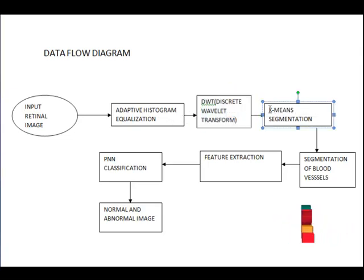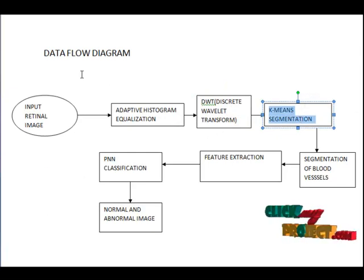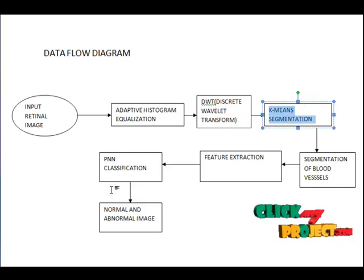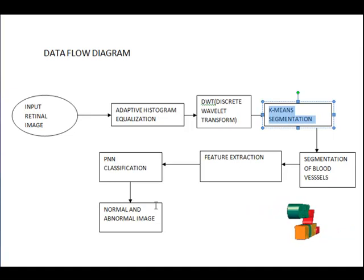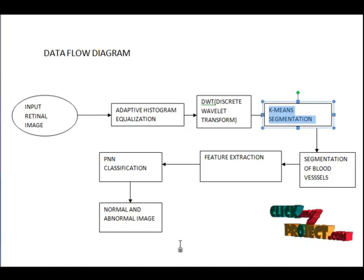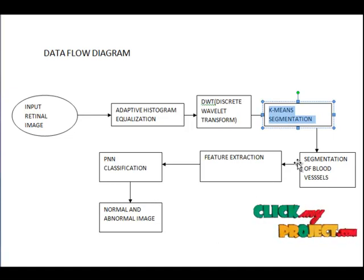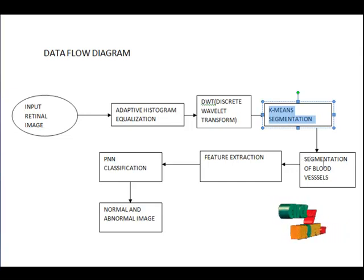The next step is K-means segmentation. K-means segmentation finds the fine regions for grayscale images from the pre-processed images. Features were extracted by the classification process. It will provide the segmentation of blood vessels.